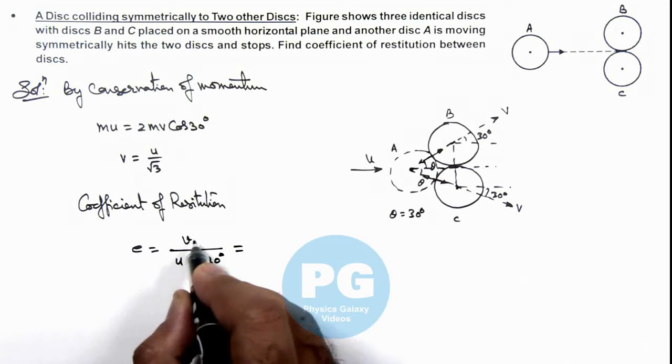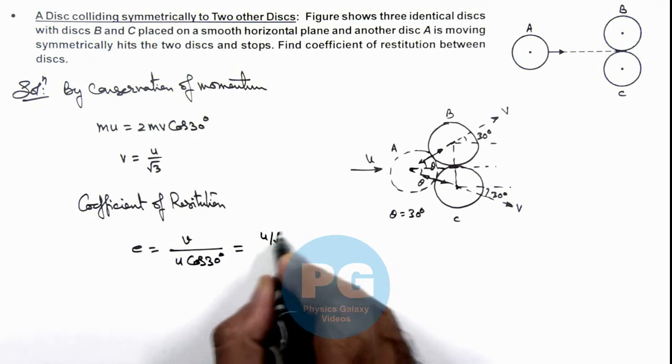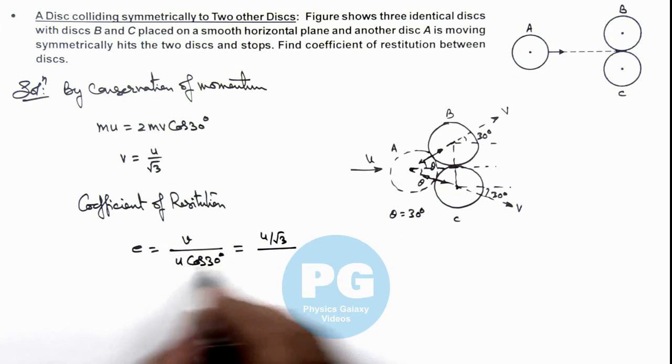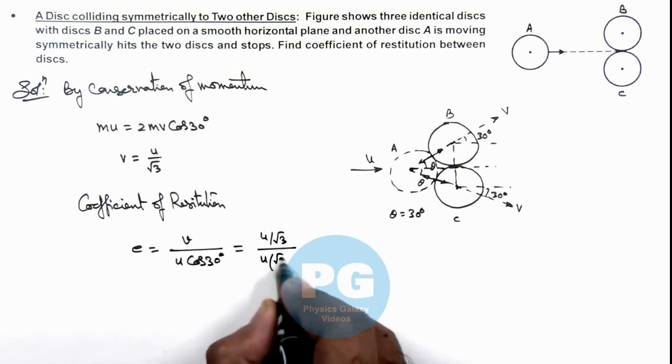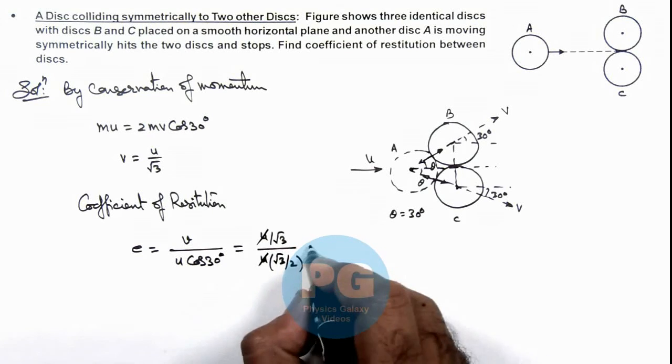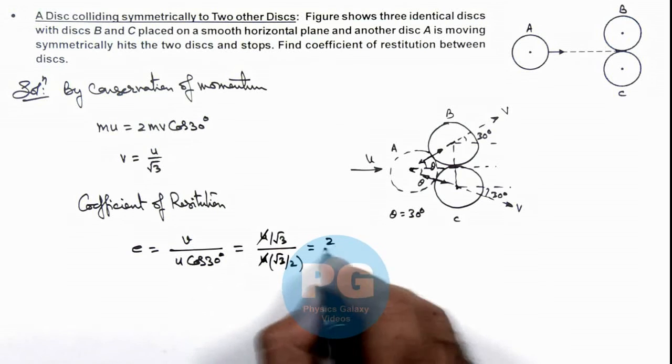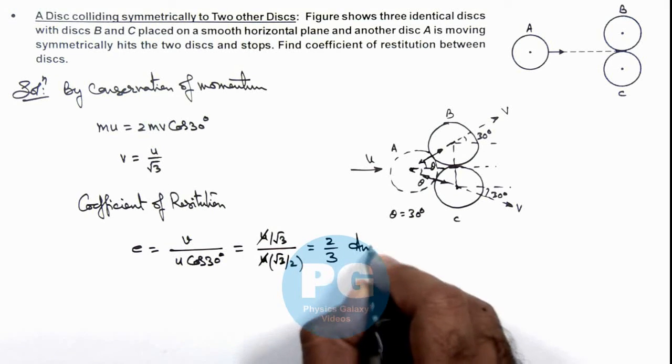We substitute the values: v is u divided by root 3, divided by u*cos(30), which is u times root 3 by 2. Here, u gets cancelled out and the value we are getting is 2 by 3. That is the result of this problem.